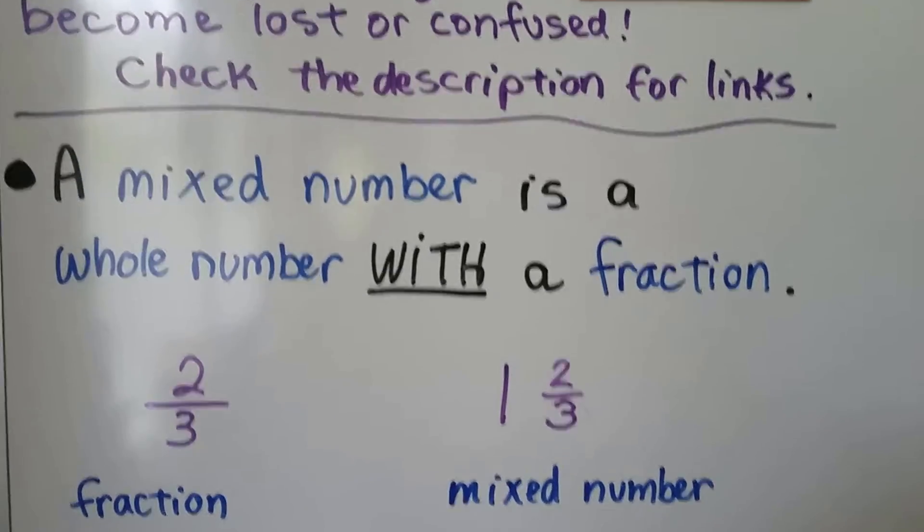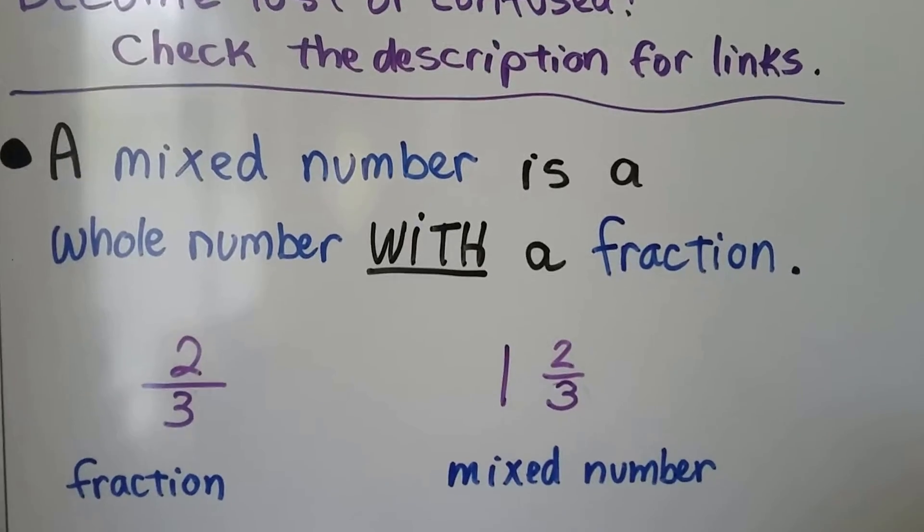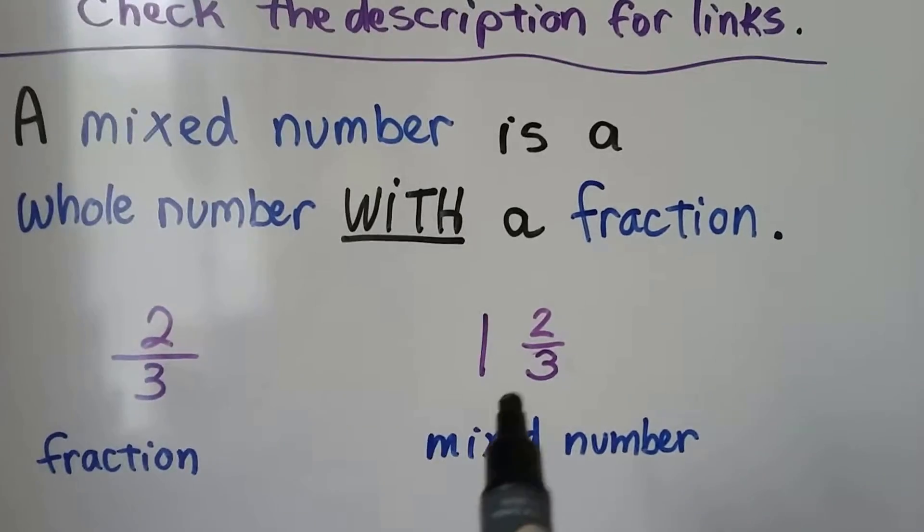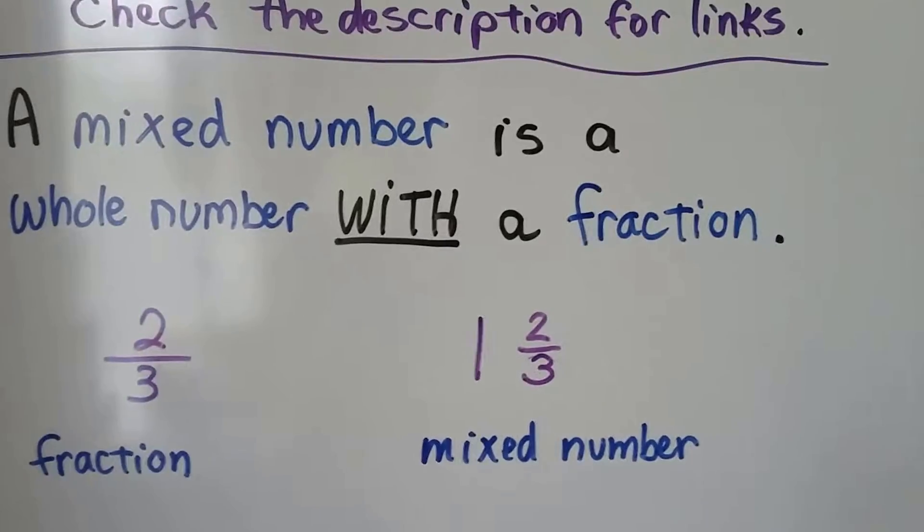A mixed number is a whole number with a fraction. So we have 2 thirds, that's a fraction, but if we put a whole number with it, now it's a mixed number. It's 1 and 2 thirds.